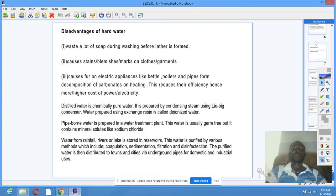Water from rainfall, rivers or lakes, is stored in reservoirs. This water is purified by various methods which include coagulation, sedimentation, filtration and disinfection. The purified water is then distributed to towns and cities via underground pipes for domestic and industrial uses.